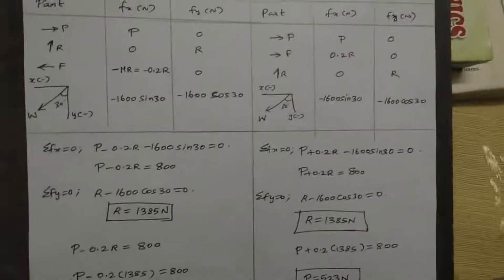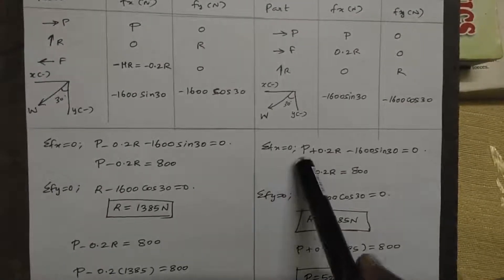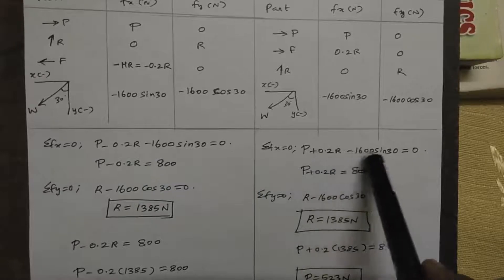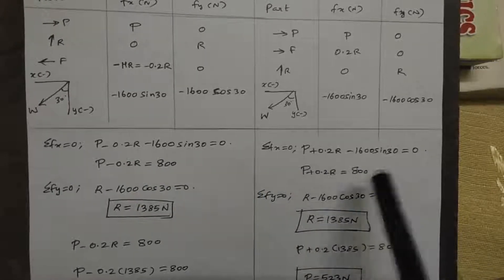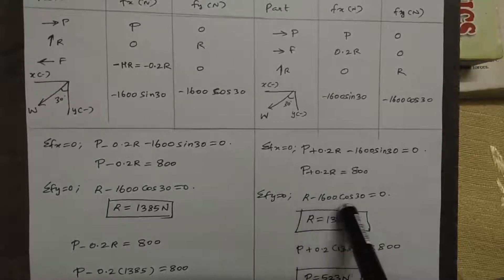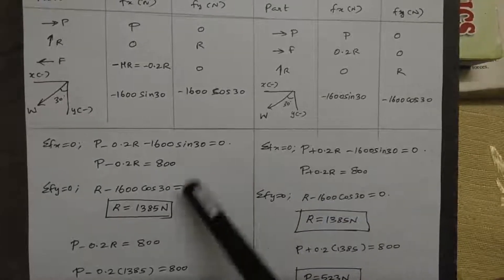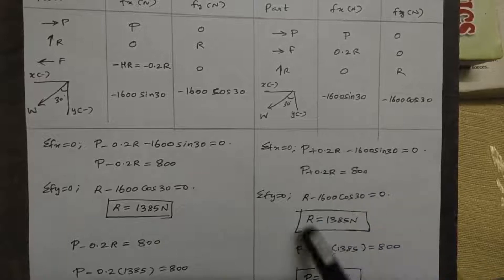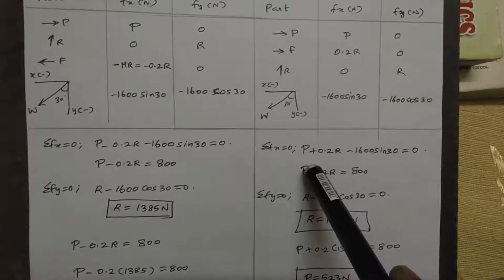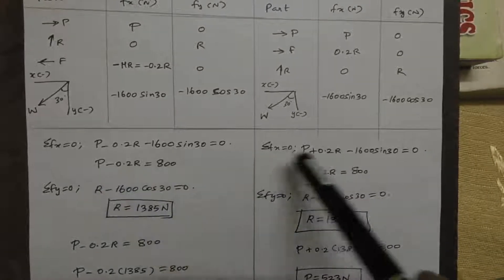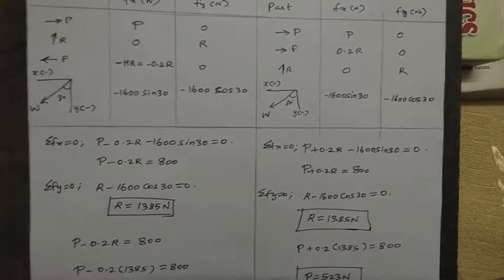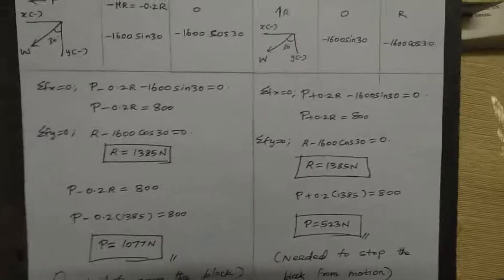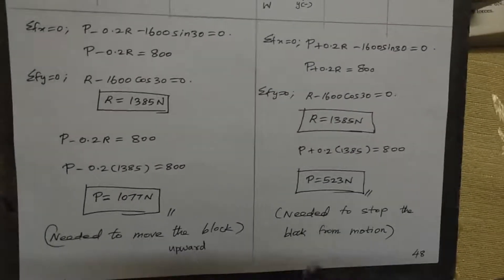F of x equals capital P plus 0.2R minus 1600 sin theta equal to 0, with value of 800. So we will be getting around 523 Newtons.